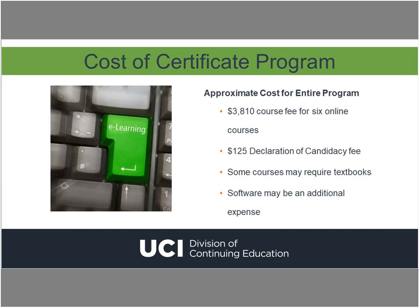Each course in the program costs $635, so you're looking at a total of $3,810 in course fees for the six online classes. You pay for each course individually at the time of enrollment. There is also a $125 certificate candidacy fee, so in the end you're looking at just under $4,000 for the entire certificate program. Please note that amount does not include textbooks, which some courses may require. Textbook information is posted on the enrollment page before you enroll.